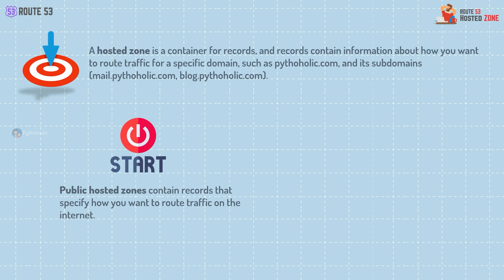A public hosted zone contains DNS records that map domain names to corresponding IP addresses or other resources that are publicly accessible on the internet, such as web servers, email servers, or load balancers.